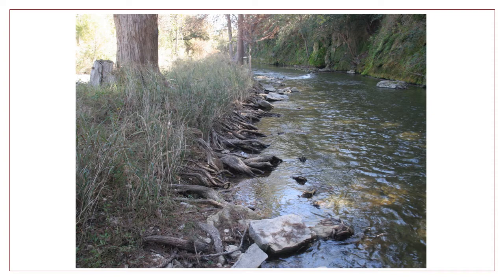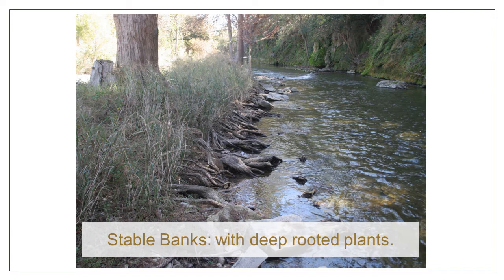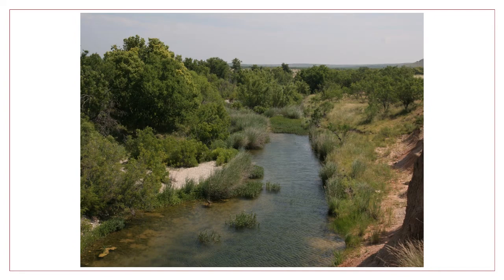Over time, larger and stronger vegetation develops. A maze of interconnected roots can hold stream banks in place even during very large floods. Without this structure, banks can be swept away and river channels can be moved around even by small floods.